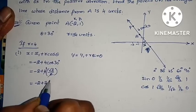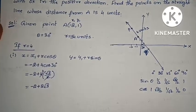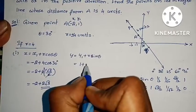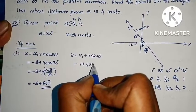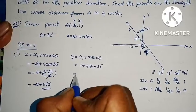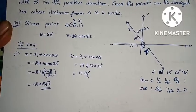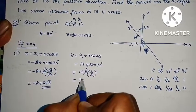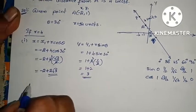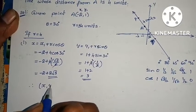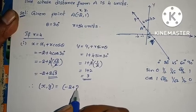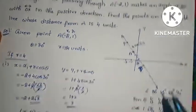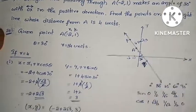For the first case (r = +4): x equals x1 + r·cos θ = -2 + 2√3. Now for y: y1 = 1, plus r = 4, times sin 30° = 1/2, so 1 + 4 × (1/2) = 1 + 2 = 3. Therefore x, y equals (-2 + 2√3, 3).